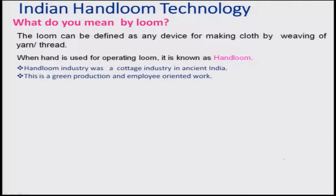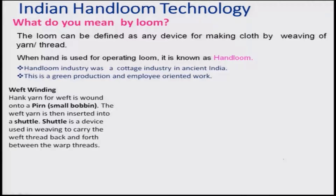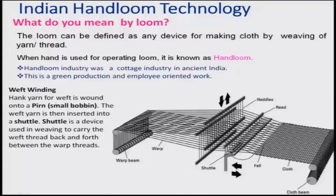Weft winding is a very important process. Generally the yarn for weft is wound onto a pirn or a small bobbin, which I had shown you earlier, and this weft yarn is then inserted into a shuttle. The shuttle carries this small bobbin for the weft, moving in one direction and coming back the other direction, by which the weft wraps around the warp to make cloth.